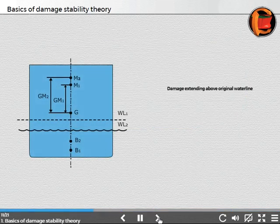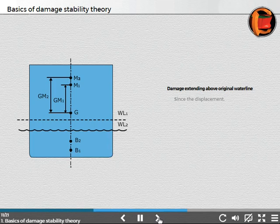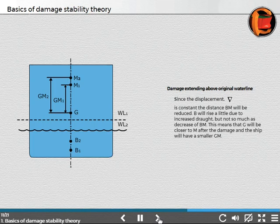Since the displacement is constant, the distance BM will be reduced. B will rise a little due to increased draft, but not so much as the decrease of BM. This means that M will be closer to G after the damage, and the ship will have a smaller GM.